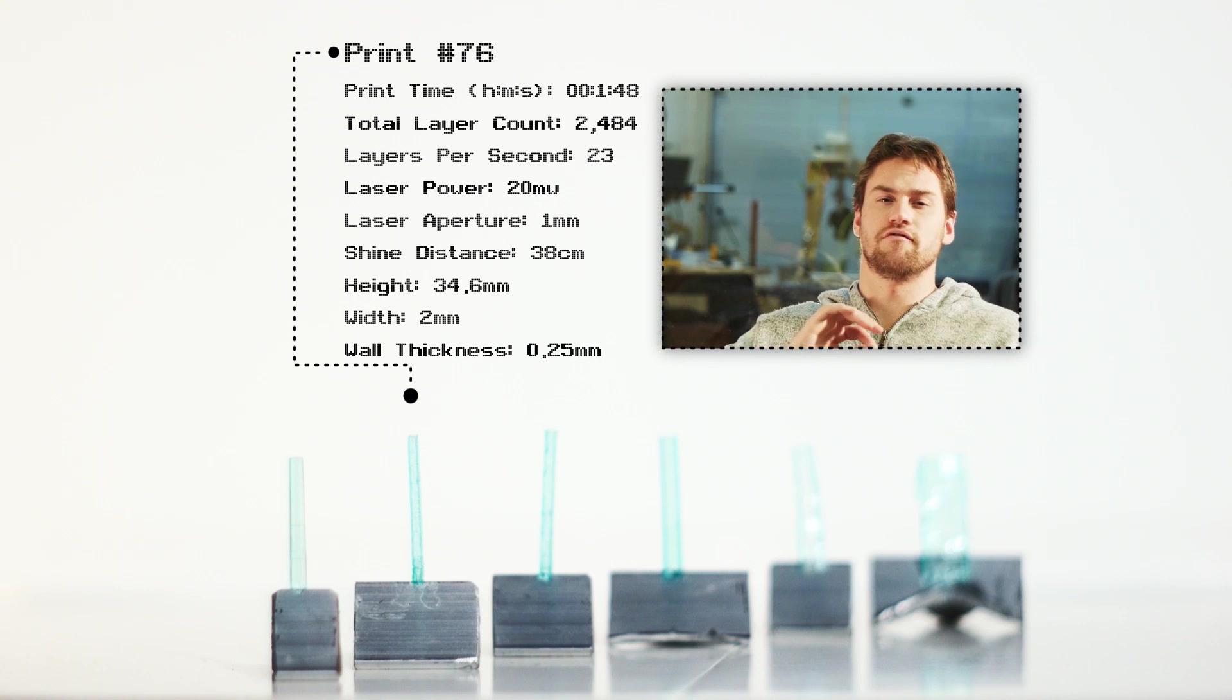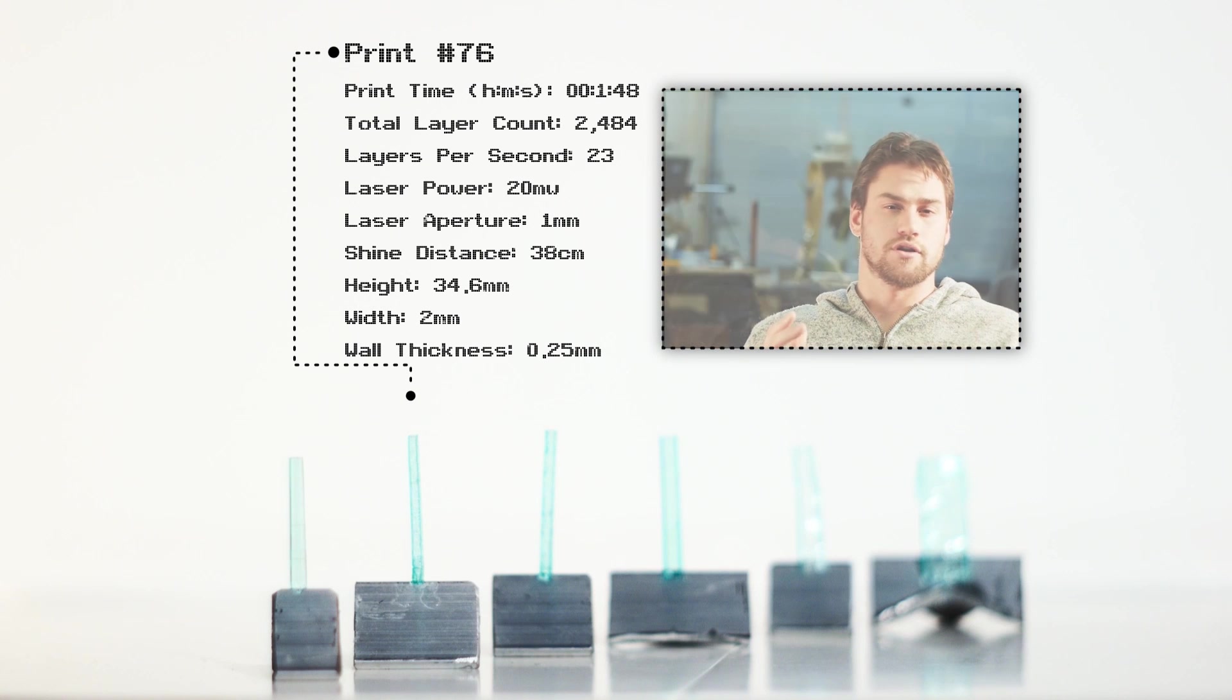So in the next print, I printed even more layers per second to see if I could get rid of these artifacts that we were seeing in the Z and we did not get rid of them. So that tells us something in print 77.